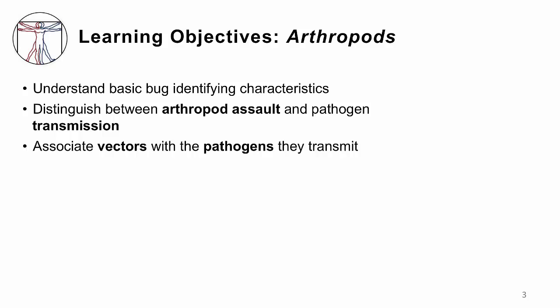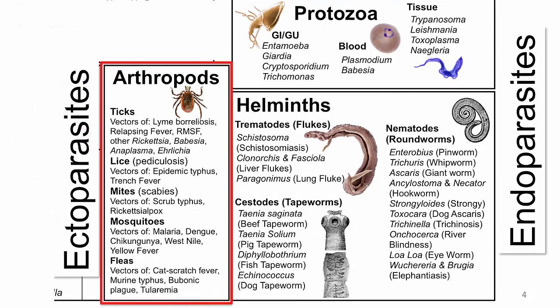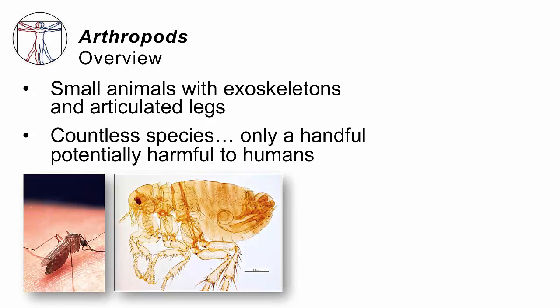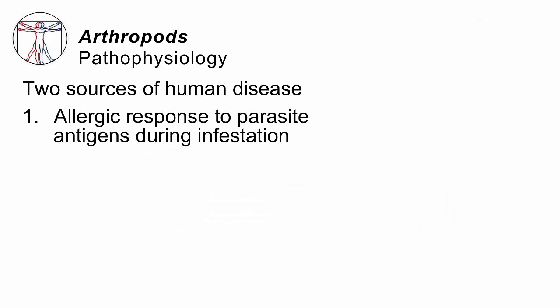You should also be able to associate these vectors with the common pathogens that they transmit. Here we are in the tree of life — these are the arthropods, also called ectoparasites. Unlike the endoparasites, the ectoparasites live on your surface. Sometimes they can get into your skin, but basically they are professional bloodsuckers and skin eaters. They all share the characteristic that they have an exoskeleton and articulated legs. There are many species, but only a handful that are potentially harmful to humans.